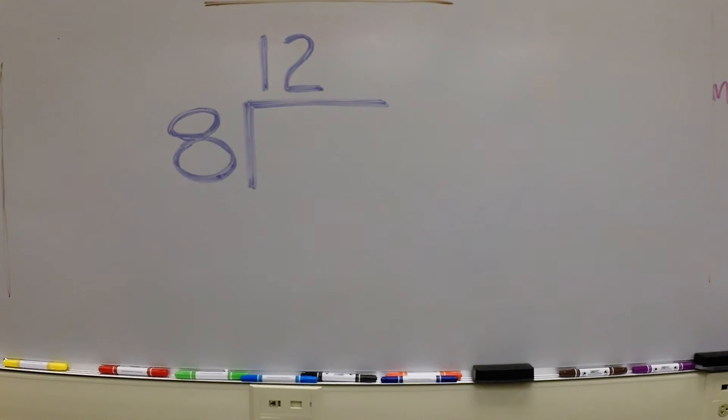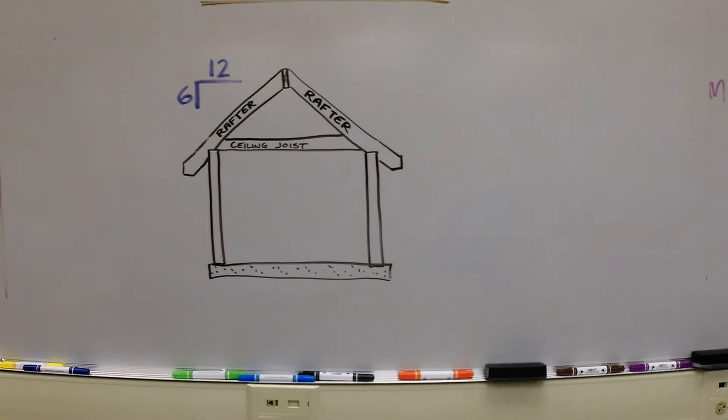Next is my pitch. The pitch is the steepness of the roof and it's noted on a set of blueprints like this. It's a ratio of rise over run. This is an 8-12 roof, meaning that there are 8 inches of rise for every 12 inches of run. My rafters will have a 6-12 pitch.